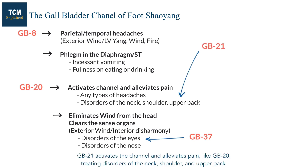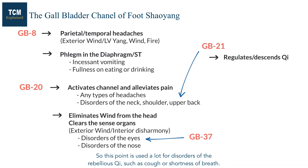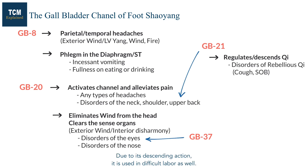GB21 activates the channel and alleviates pain like GB20, treating disorders of the neck, shoulder, and upper back. GB30 has a strong action of regulating qi and descending qi, so this point is used for disorders of rebellious qi such as cough or shortness of breath. Due to its descending action, it is also used in difficult labor.